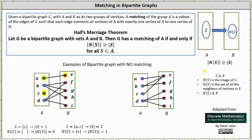Let's look at one more graph. Analyzing this graph, let S be the set of vertices a, b, and c. Notice a is adjacent to vertex e, b is adjacent to e and f, and c is adjacent to e. So N(S) equals the set of vertices e and f. The cardinality of S is three and the cardinality of N(S) is two. Since two is not greater than or equal to three, by Hall's Marriage Theorem the graph does not have a matching of A.